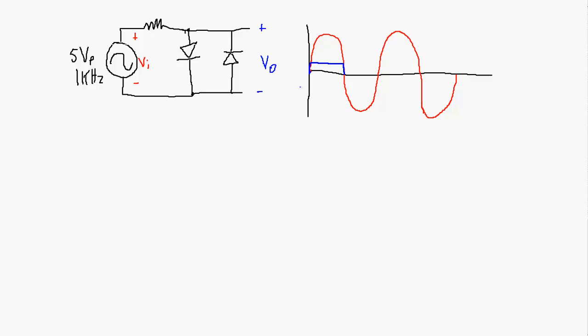Going in the negative direction, this side of the diode needs to be at a higher voltage than the other side. So we need to get down to an input voltage of about minus 0.7 volts before the second diode will become forward biased and start conducting. Up until that point, the output will follow the input. Then at about minus 0.7 volts, the output maintains that voltage, and when the input again rises above minus 0.7 volts, the diode becomes reverse biased again. So we get clipping on the positive side as well as clipping on the negative side.